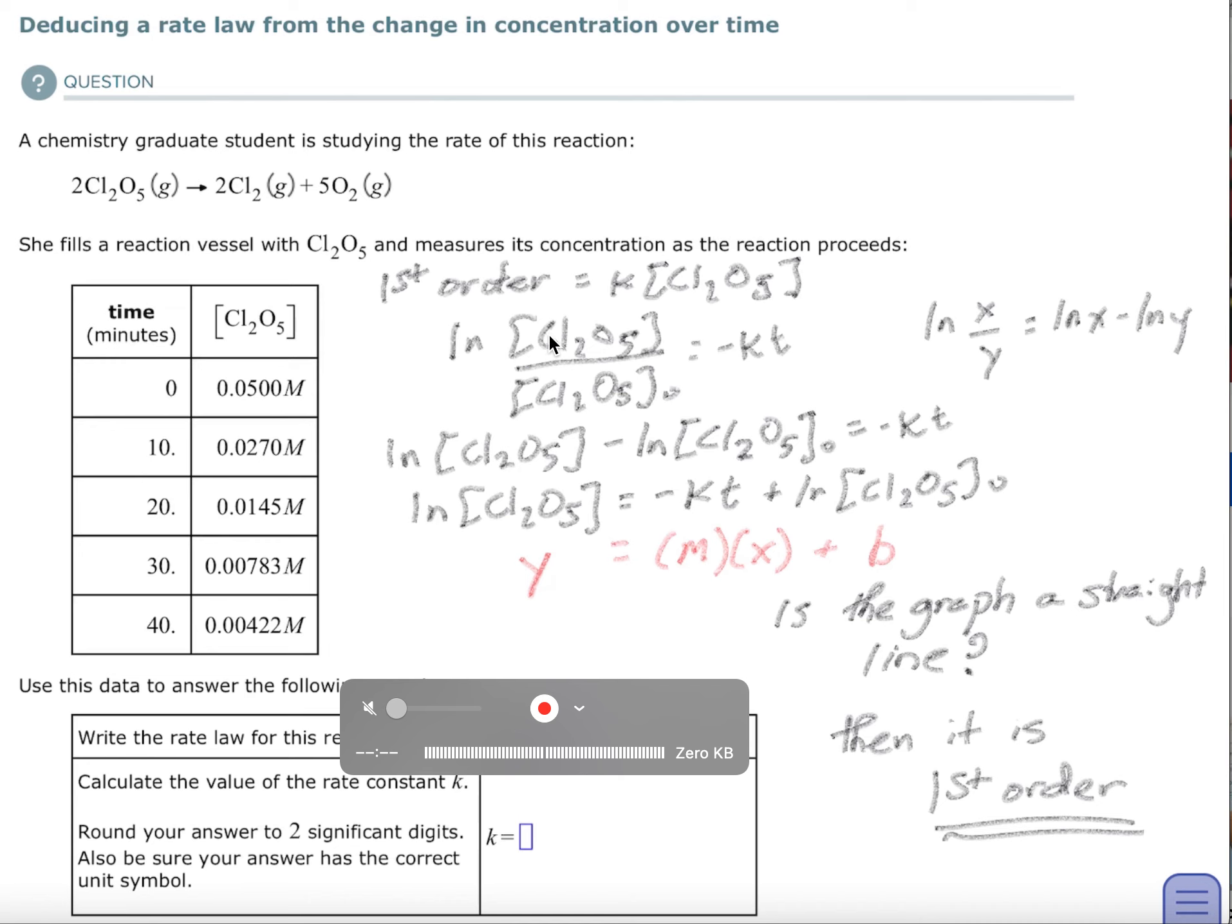For a first order, it is the natural log of the material, so the gas that's going away, whatever our current amount is, divided by the original molarity equals negative k times t. So that is the integrated rate law.